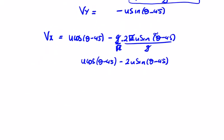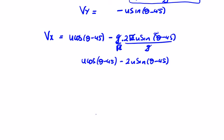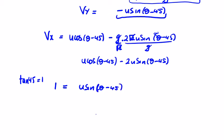So if we get the tan of the angle — we said it was 45, so 1, since tan(45°) = 1 — this equals minus v_y over v_x. Changing the sign on minus u sin(θ-45) to plus, we get: 1 = u sin(θ-45) over [u cos(θ-45) minus 2·u sin(θ-45)].